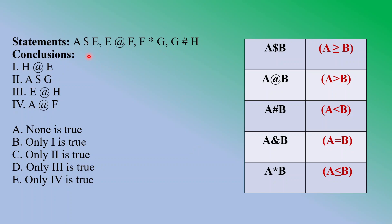Let's first decode this: a$ e — dollar means greater than or equal to — so a is greater than or equal to e. e@ f — at the rate means greater than — so e is greater than f. f* g — asterisk means smaller than or equal to — so f is smaller than or equal to g. And g# h — hashtag means smaller than — so g is smaller than h.